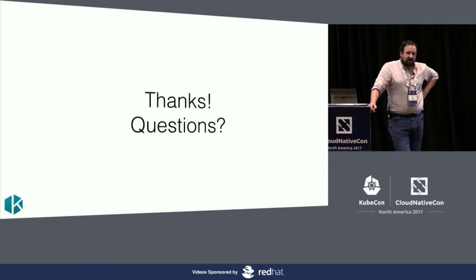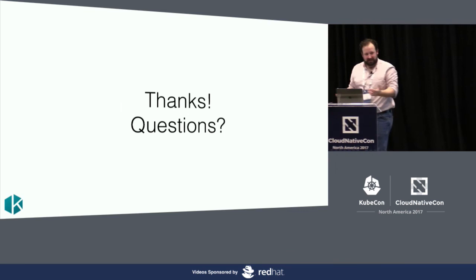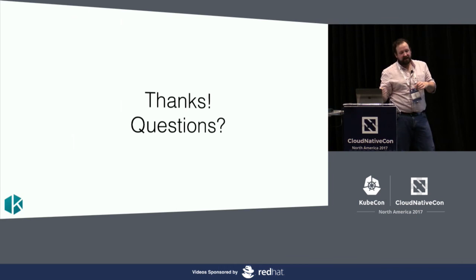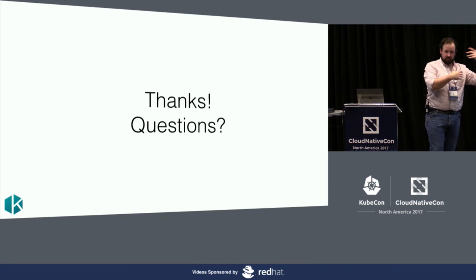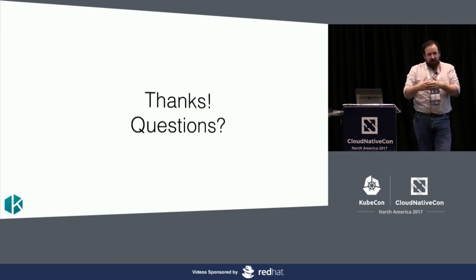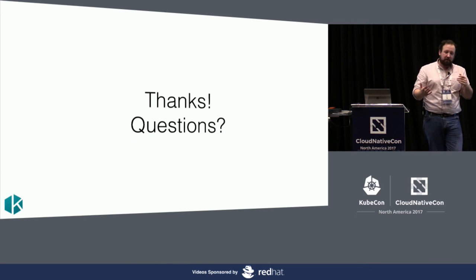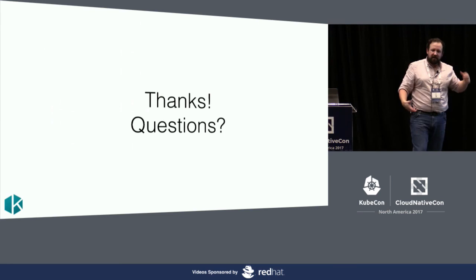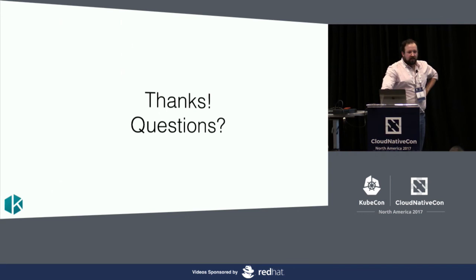Do you instrument outgoing requests with the RED method? That's a really good question. I don't, except for when I'm talking to Amazon. I've been really dissatisfied with the metrics I can get out of CloudWatch. So when I'm talking to DynamoDB or S3 or any service I don't own, I instrument on the client side. But normally when talking to services I do own, I think it's good enough to instrument on the server side. When the network is broken, it normally becomes pretty obvious pretty quickly.